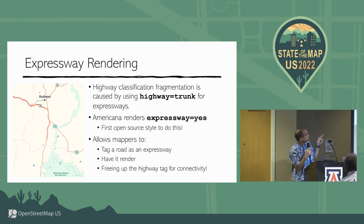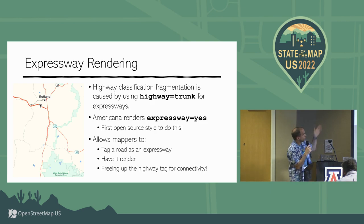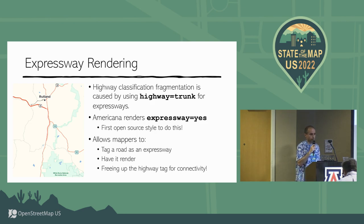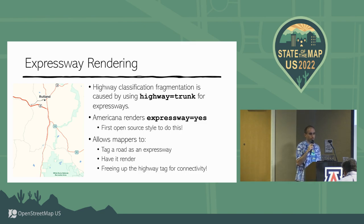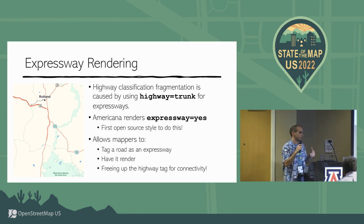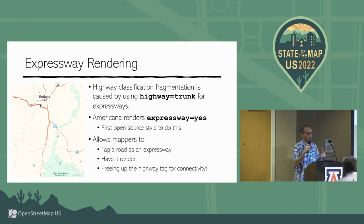I've got a screenshot from Vermont — that vertical section that's double-cased in red is a section of trunk highway that's also an expressway. We have that differentiated rendering to encourage mappers to add expressway tagging where a road is expressway.